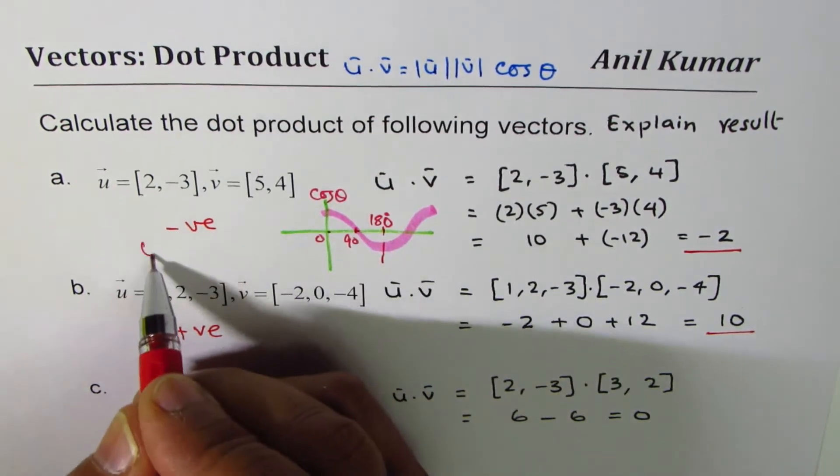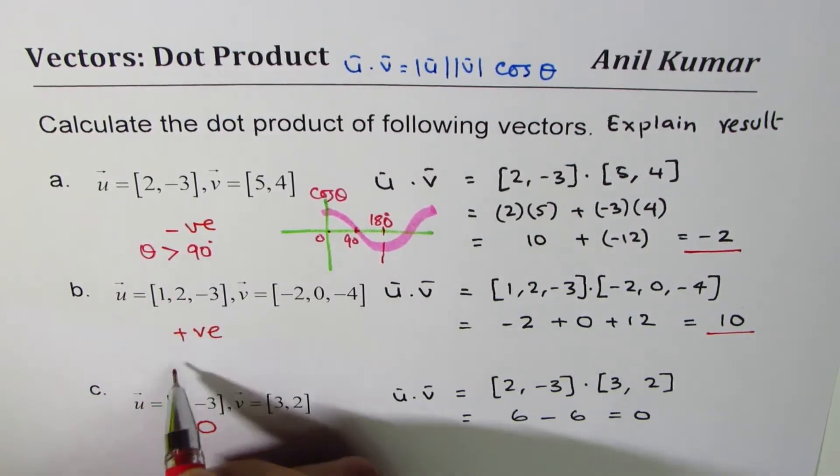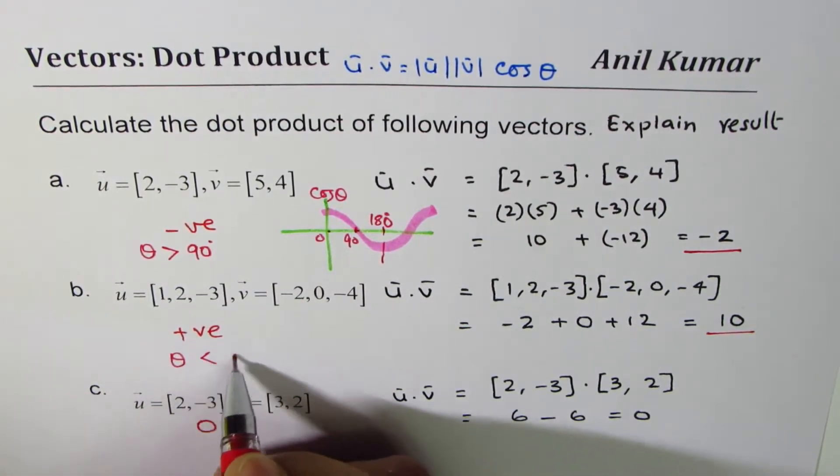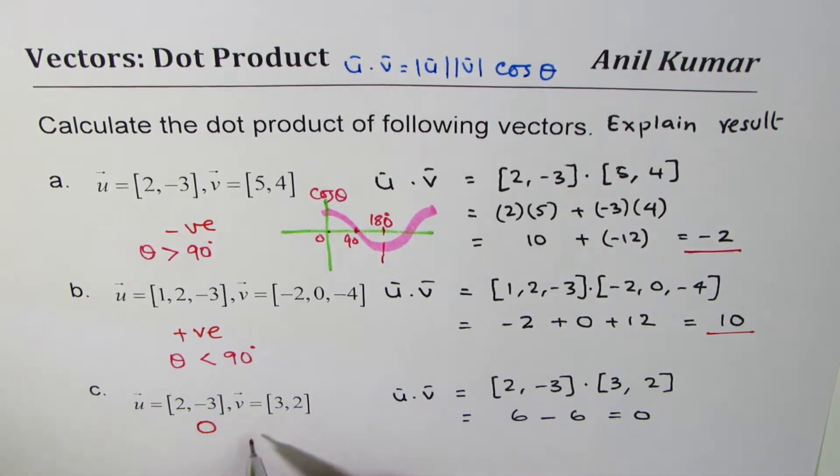So here we see theta is greater than 90 degrees. In this case the angle between them is less than 90 degrees, and here angle theta is equal to 90 degrees.